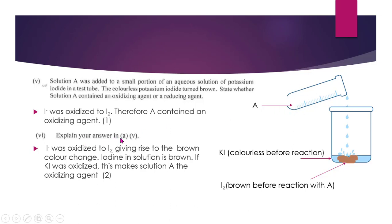So explain your answer in part five. Iodide was oxidized to iodine, giving rise to the brown color change. Iodine in solution is brown. If potassium iodide was oxidized, this makes solution A the oxidizing agent. So this is also what we refer to as a single displacement reaction. They didn't tell us exactly what is A, so we have to work with this information that we are given.